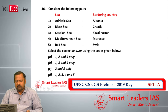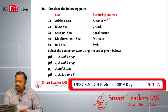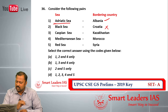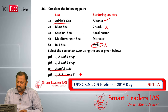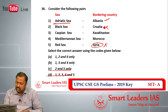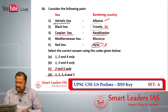Question number 36: consider the following pairs of countries and their bordering seas. Albania borders the Adriatic Sea — that is correct. Croatia in the Black Sea — that is wrong, Croatia is also in the Adriatic Sea. Syria and the Red Sea — that is also wrong, Syria is on the eastern arm of the Mediterranean Sea. So option 5 is removed. Option 1 should remain. Since 2 is wrong and Croatia is incorrectly placed in the Black Sea, and Kazakhstan bordering the Caspian Sea is correct — the answer for question 36 is B.